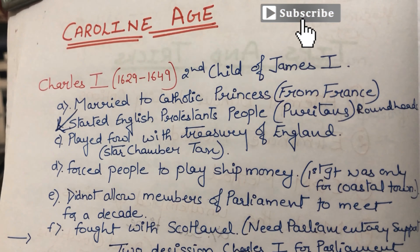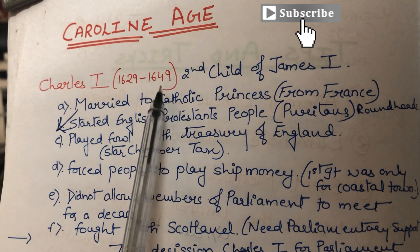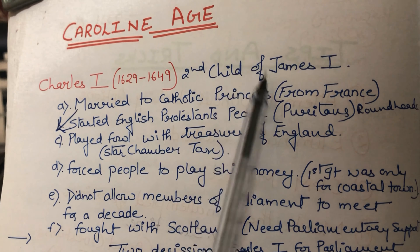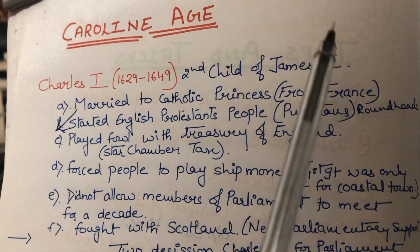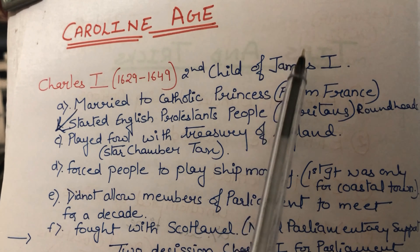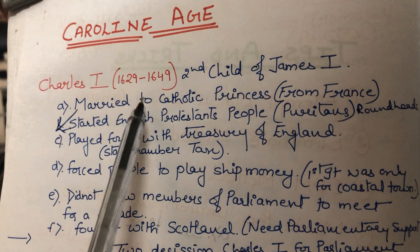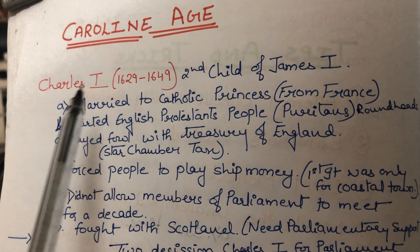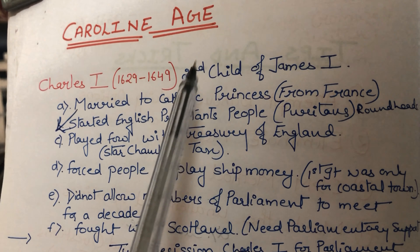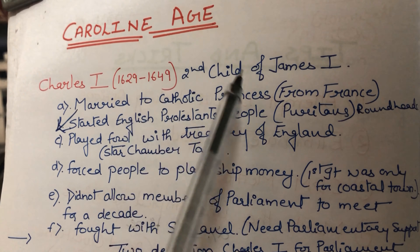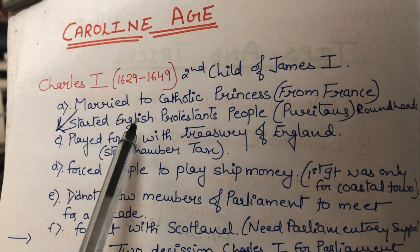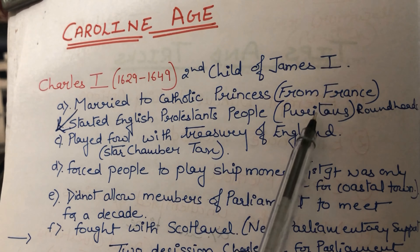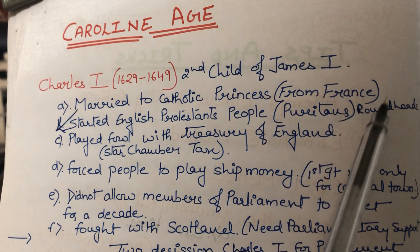Now let's discuss the Caroline Age, which is from 1629 to 1649, ruled by Charles I, who was the second child of James I. His name could have been James II, but because he was already king as James VI in Scotland, to avoid confusion, he was named Charles I. Charles I married a Catholic princess from France, and because of this, some people were against him. Those people who were against Charles I formed a group known as the Puritans, also known as the Roundheads.